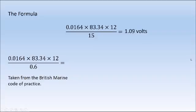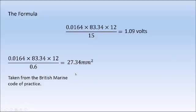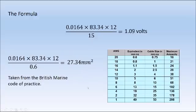1.09 volts is way above the 0.6 volts allowed for this circuit. So the next step is to go back to the previous approach and actually calculate the correct cable size. Using the similar formula — 0.0164 times 83.34 times 12 — but this time dividing by our maximum allowed volt drop (0.6V) instead of the cable size, we get 27.34 millimeters squared. Again, this is an odd size that manufacturers probably won't make, so we go to the cable chart: 25mm² is too small, so 35 millimeters squared is perfect — that will maintain our 0.6-volt maximum allowed volt drop.